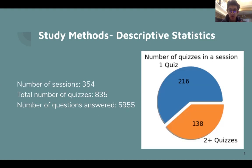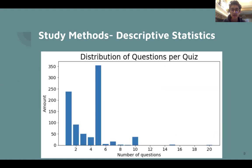So in terms of what we were able to gather from the data, there was a total of 354 study sessions, that custom feature that I described earlier. There were over 800 quizzes taken with almost 6,000 questions answered. And the figure on the right shows that about 140 students used multiple quizzes in a session, which means that they took back-to-back quizzes without getting up, whereas over 200 just had a single quiz in a session.